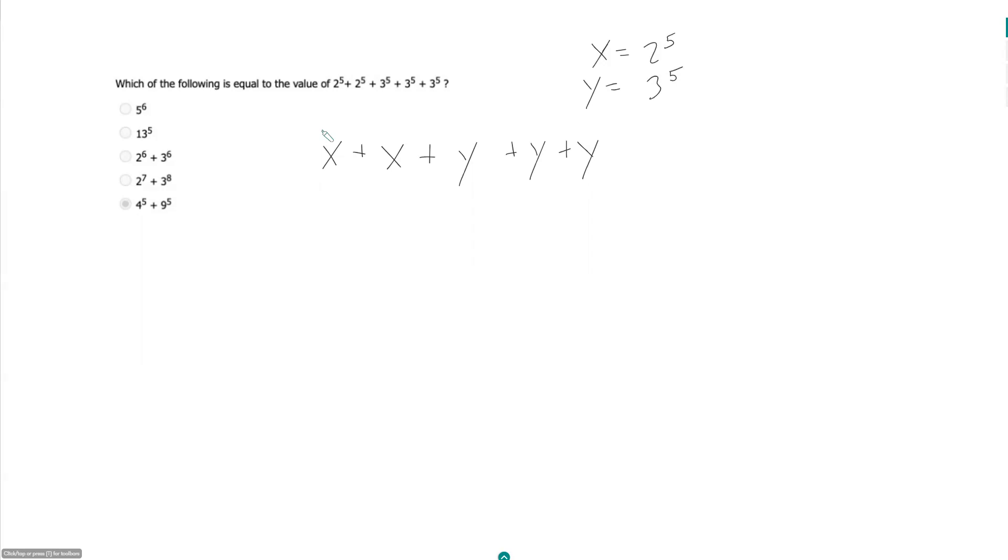So in this case we would get, this is equal to 2x plus 3y. So in our case there would be 2 times 2 to the fifth plus 3 times 3 to the fifth.